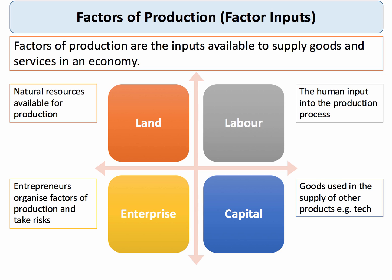We normally make a distinction between four main factor inputs. Land includes the natural resources available for production, including climatic conditions. Labour is the human input into the production process, both the quantity of labour — the labour supply — and also the quality of labour, the human capital of the workforce.